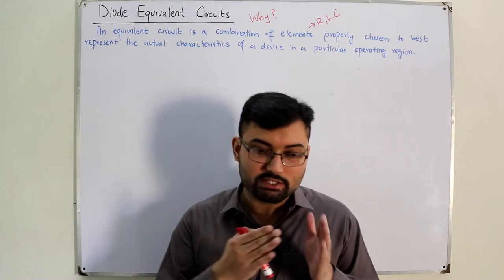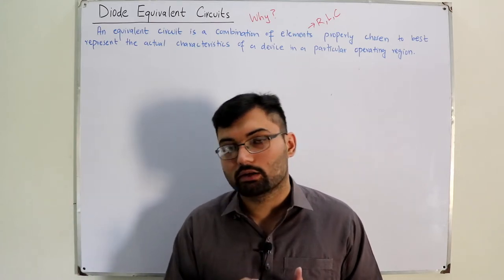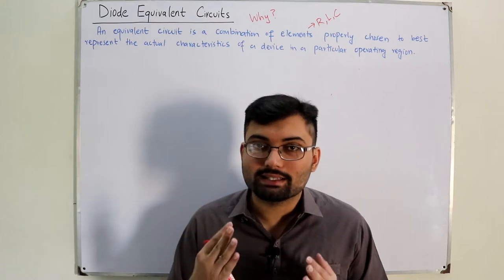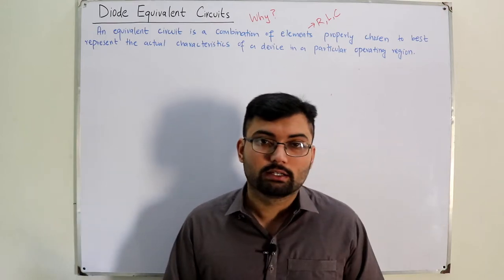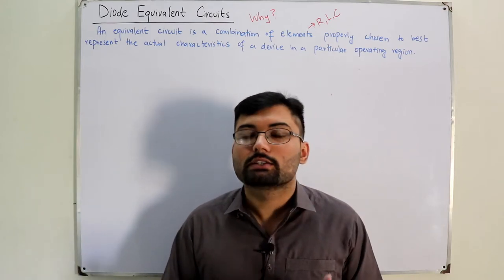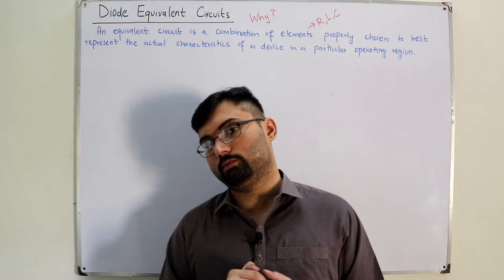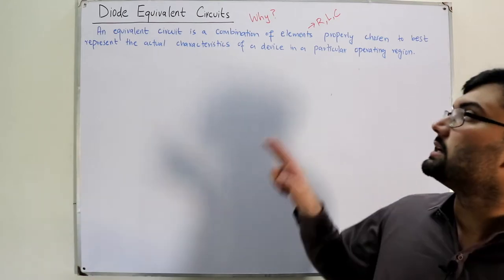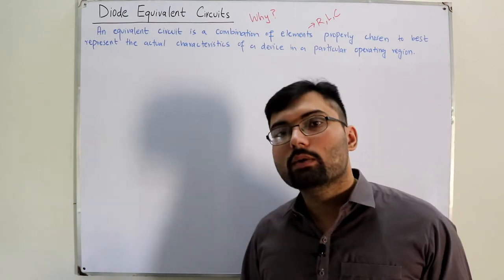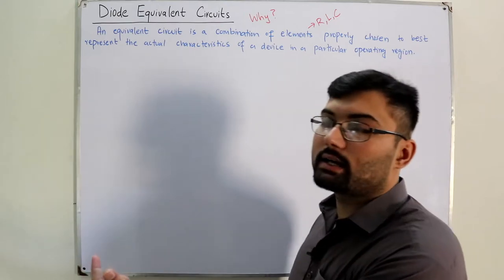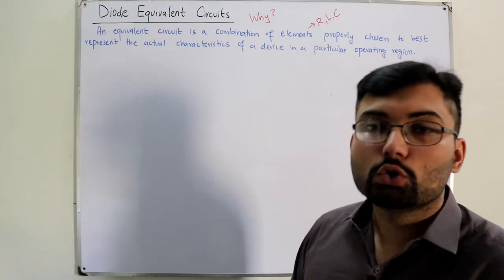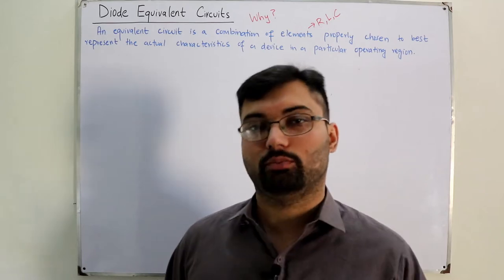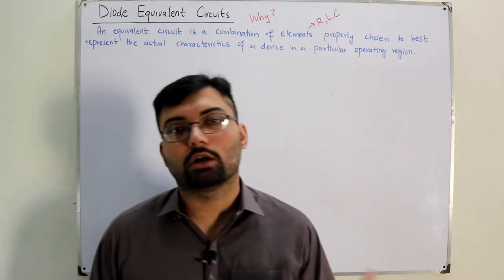For example, if you have a diode in a circuit, you cannot apply Ohm's law to it. You cannot apply Norton's theorem, Thevenin's theorem, superposition theorem, and multiple circuit analysis tools. But when you have a resistor, an inductor, a capacitor — the basic things — you can apply these circuit analysis tools. This is the reason we replace the diode by an equivalent circuit in a circuit diagram — to analyze it, to solve the problem, to solve the circuit.